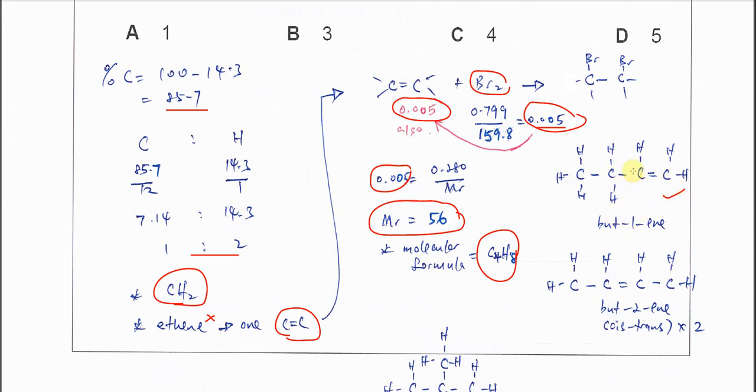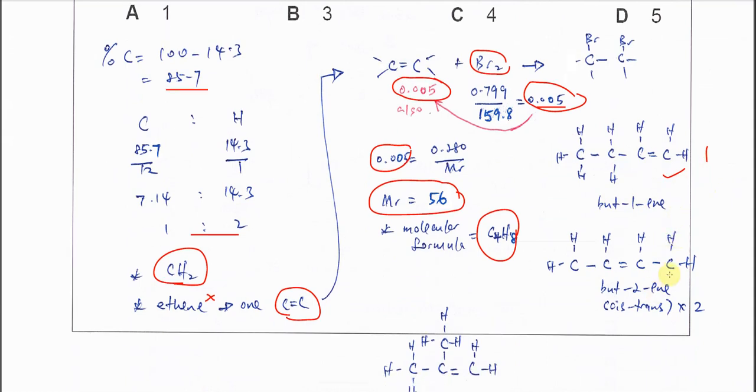But-1-ene has no cis-trans isomers, so that's one. It can also be but-2-ene, which can form cis-trans isomers because each carbon in the double bond has two different groups. Therefore, that's two isomers from but-2-ene.